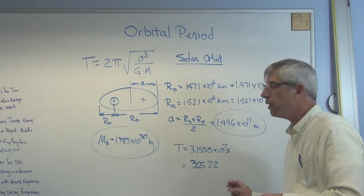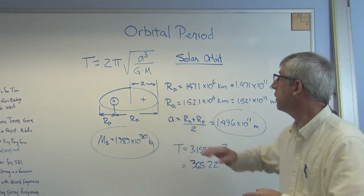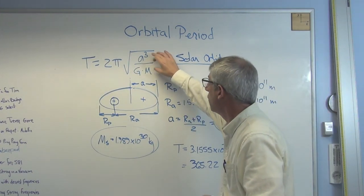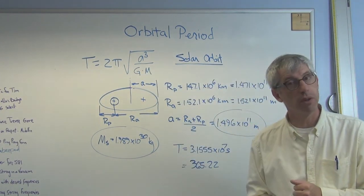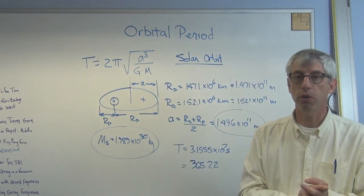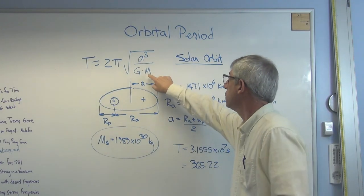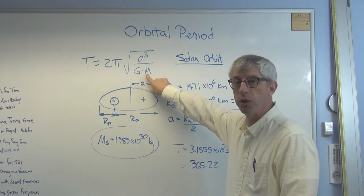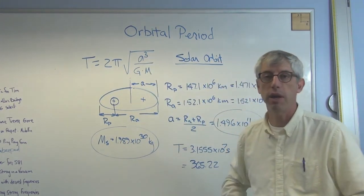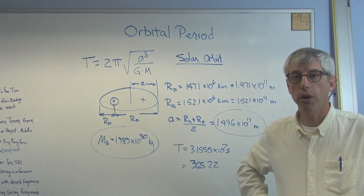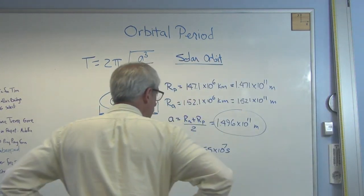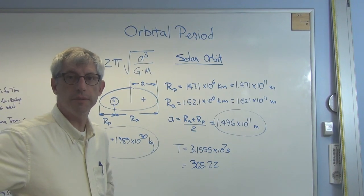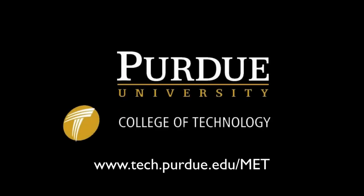All right, so there you go. The period of an orbit is easy to calculate. The expression is very simple. This expression works whether it's a circular orbit or an elliptical orbit. All you need to know is the mass of the body around which you're orbiting and the semi-major axis. So there you go. I hope this helps, and I'll talk to you later.